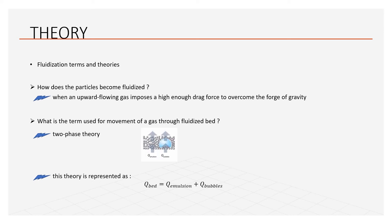The two-phase theory is represented by the equation: Q_bed = Q_emulsion + Q_bubbles, where Q_bed is the total gas volumetric flow rate through the bed, Q_emulsion is the gas volumetric flow rate through the dense phase, and Q_bubbles is the gas volumetric flow rate through the bubbles. Up to the minimum fluidization point, all the gas moves through the bed via the emulsion phase. That's all for me. I hope you can understand. Thank you.